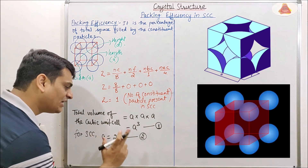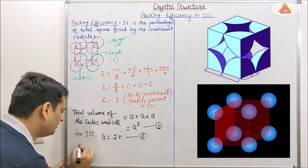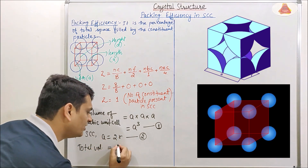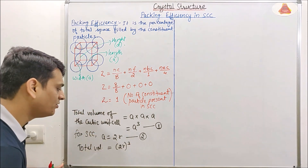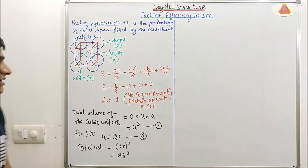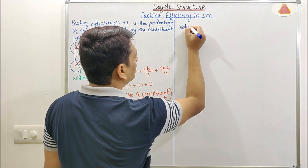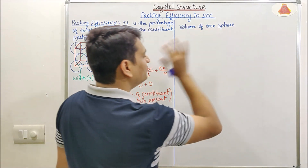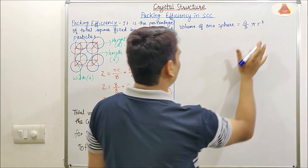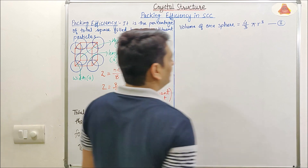Now I will put the value of A from equation 2 into equation 1. So total volume of the cubic unit cell equals A³, which becomes (2R)³. After solving we get 8R³. Now coming to the calculation of the volume of 1 sphere or 1 constituent particle — volume of 1 sphere is equal to (4/3)πR³. This is the formula for volume of 1 sphere, and this is equation 3.